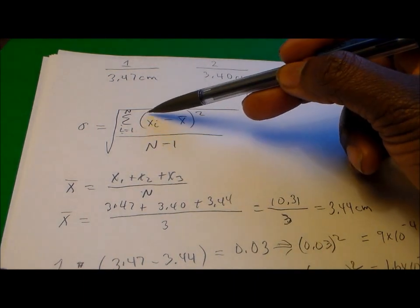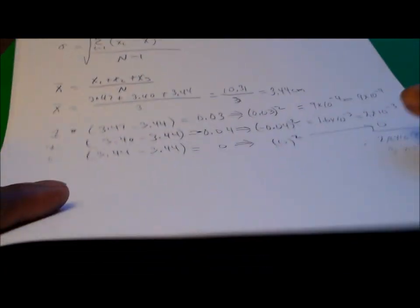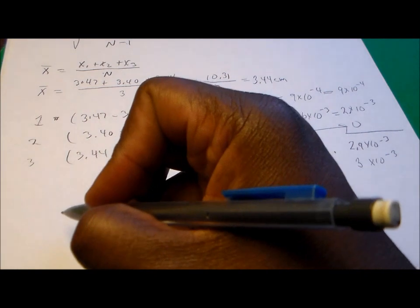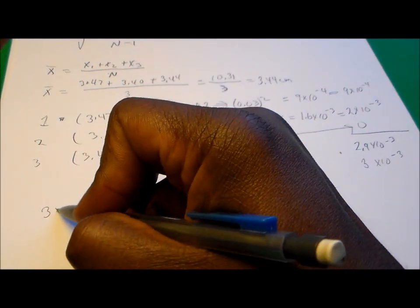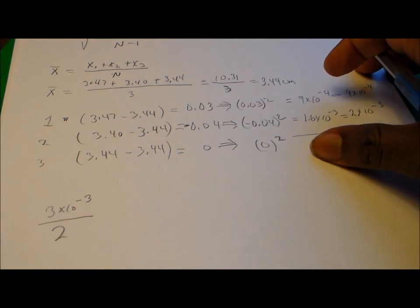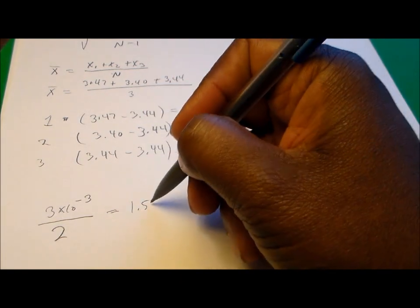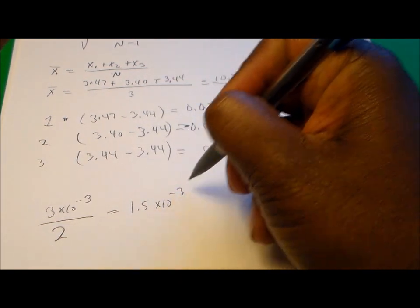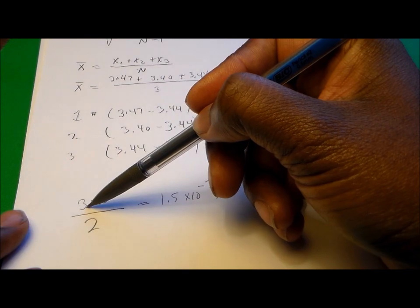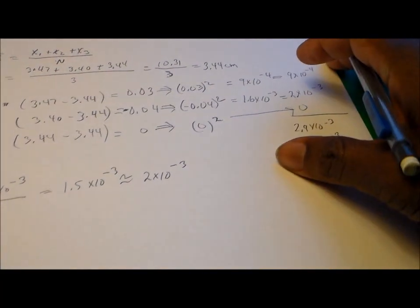Going back to the formula, we've completed the numerator. Now we divide by the number of samples minus one. Our sample number was three, so three minus one gives us two. So we have 3 times 10 to the minus three divided by two, which gives us 1.5 times 10 to the minus three. Paying attention to significant figures with one significant figure, we approximate that as 2 times 10 to the minus three.